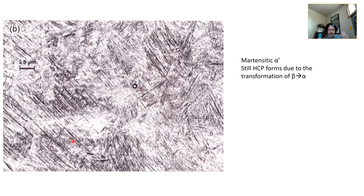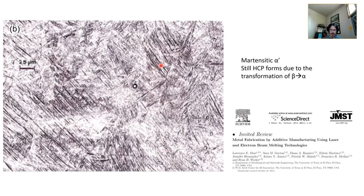The martensitic alpha prime occurred because of the transformation from beta to alpha. There's some energy driving force transforming beta to alpha, but it didn't go straight to alpha — it went to martensitic alpha prime, which has that needle-like martensitic structure. This came from this journal, which I'll have posted for you all to read, because it's a good example of using several microscopy techniques together to tell a story.